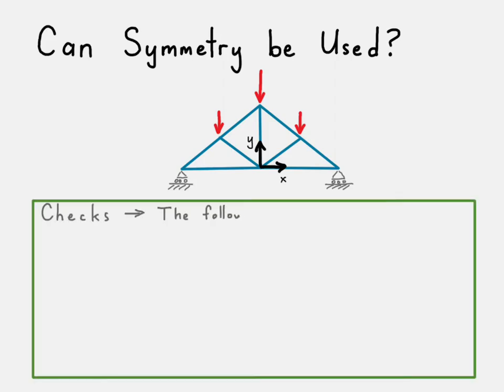We want to run through a series of checks. The following must be symmetric about an axis of symmetry or mirrored about the axis of symmetry in order for symmetry to be used. Basic symmetry at this point.